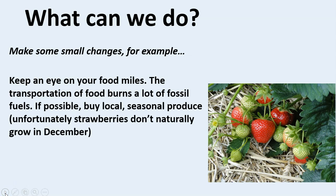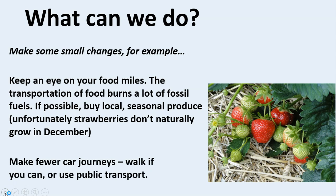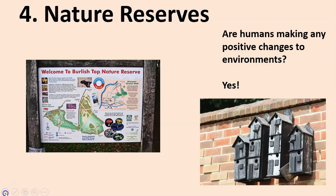So what can we do? Well we can all make some small changes. For example, we can keep an eye on our food miles — the transportation of food burns a lot of fossil fuels. If possible, buy local, seasonal produce. At the moment there are lots of British strawberries in the shops. But strawberries don't grow in this country in December, and what happens is we get them imported from places like Morocco or Spain, and that uses air miles and burns fuels and leads to global warming. You could also make fewer car journeys. A lot of us have already started doing that during lockdown. Walk if you can, and when we're allowed again, use public transport.